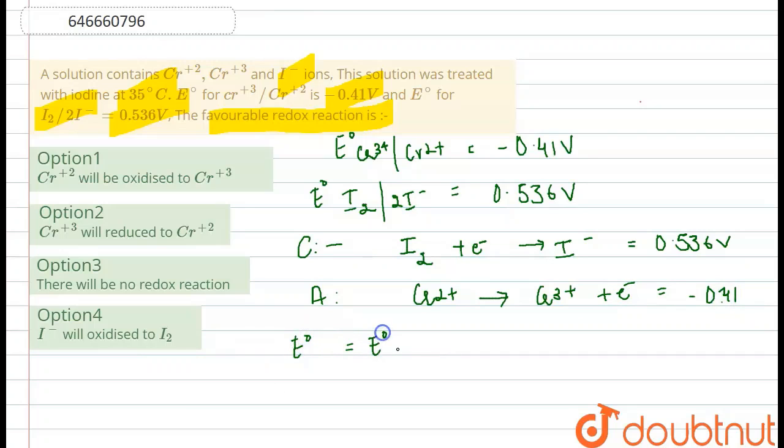We know that E naught of a cell is given by E naught cathode minus E naught anode. So the value here obtained will be 0.536 volt minus minus 0.41.